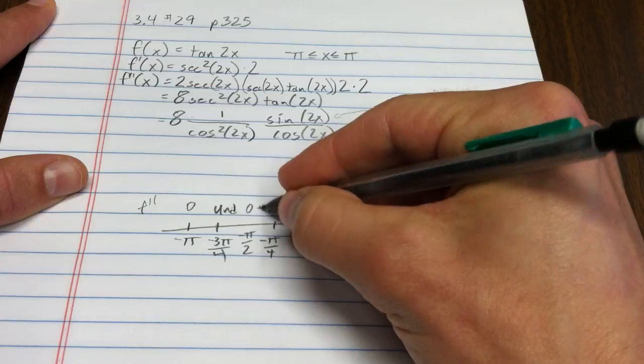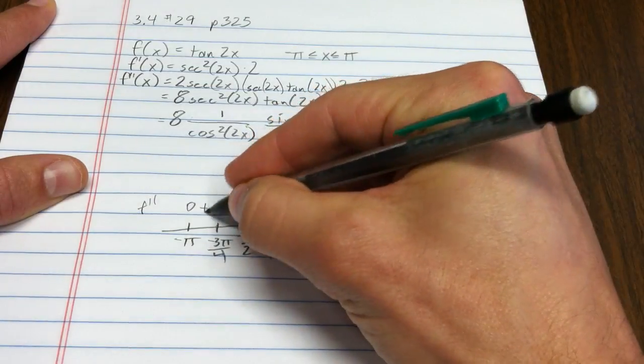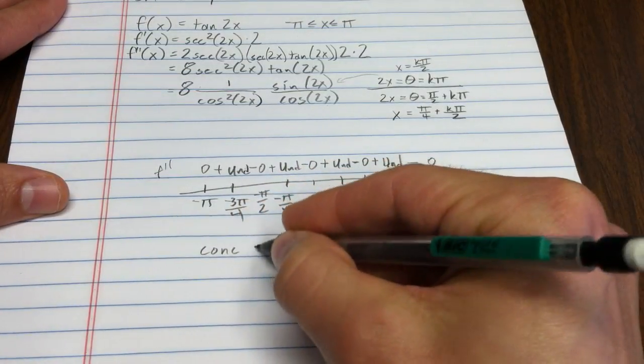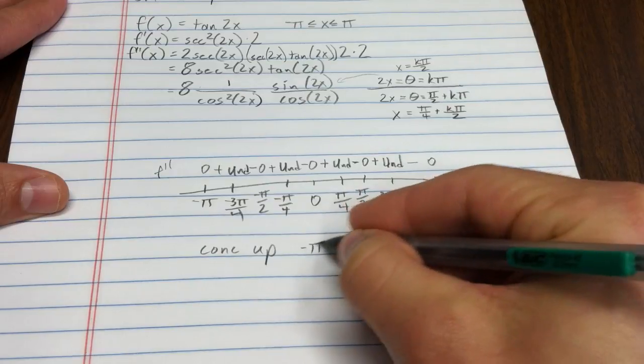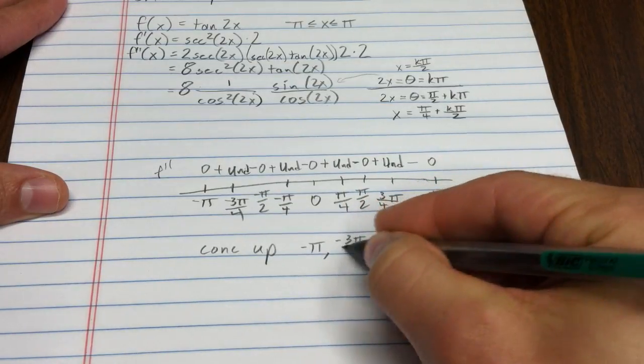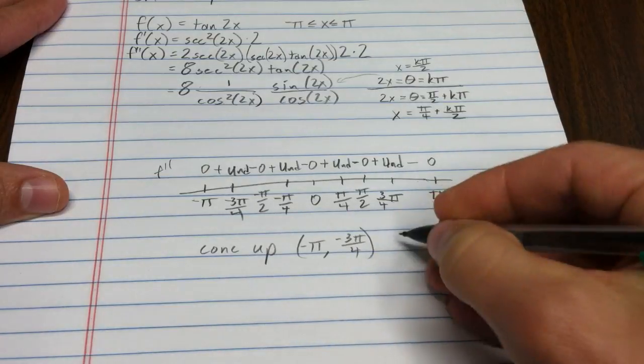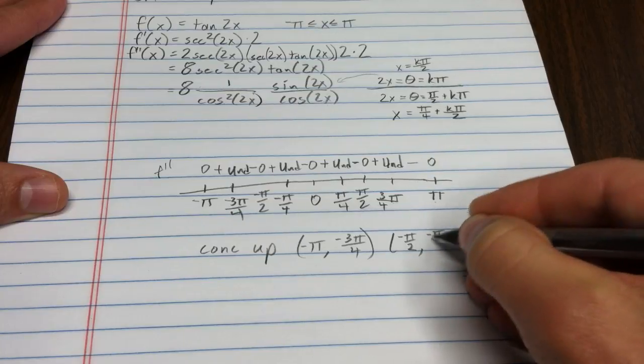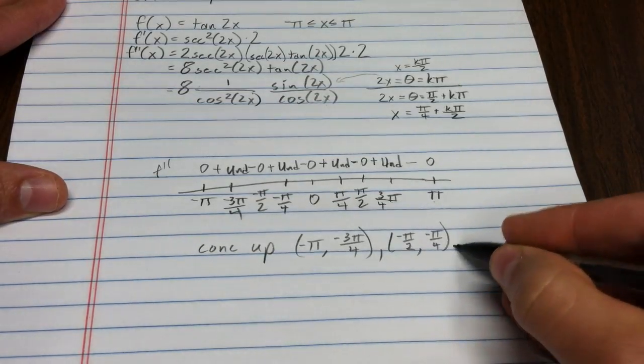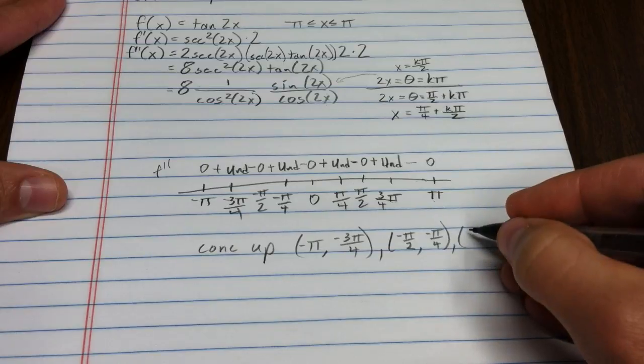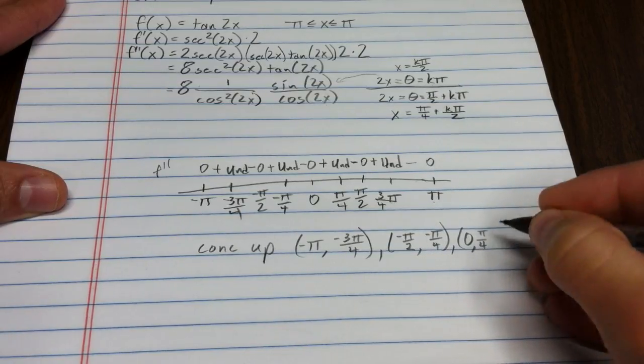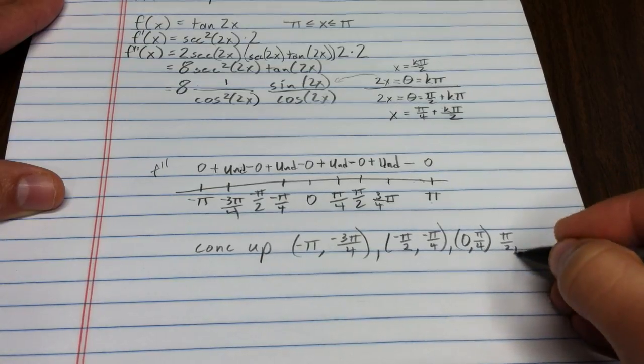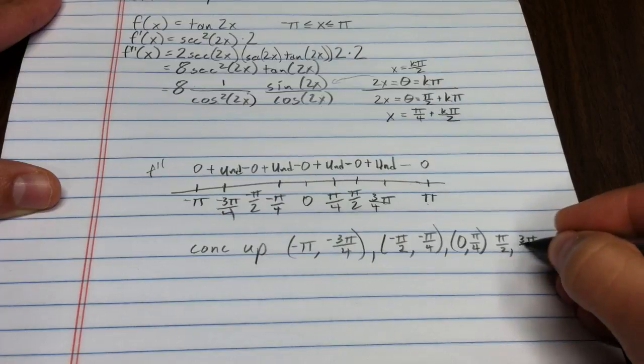Now, that pattern continues over on the other side. So, what does that mean? That means we are concave up from negative pi to negative 3 pi fourths. From negative pi halves to negative pi fourths. From 0 to pi fourths. From pi halves to 3 pi fourths.